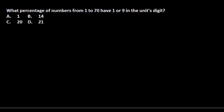Welcome back! Let's solve this question: what percentage of numbers from 1 to 70 have 1 or 9 in the unit's digit? For solving this problem, you must know what the unit's digit means. When you write a number like 18, the unit's digit is 8.